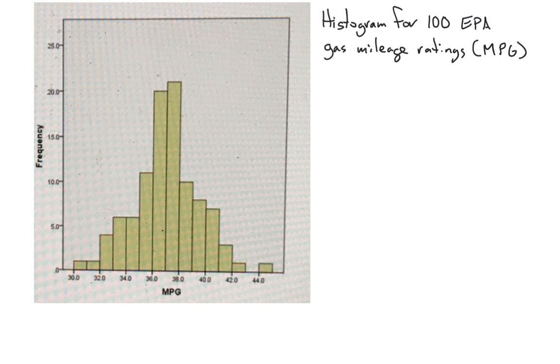So looking at this, we can notice some patterns in the data. One thing that I notice is that most of the data seems to be in the center of the data set. There seems to be lots of cars towards the middle. There's 20 cars that have a gas mileage rating between 36 and 37, and 21 cars that have a gas mileage between 37 and 38 miles per gallon. So most of them seem to be in the center. Very few at the edges. Only one in 30 to 31 and 31 to 32, and same on the other side. So it looks like the data is mushed towards the center.